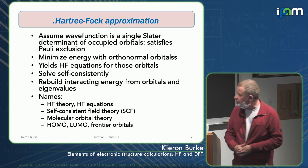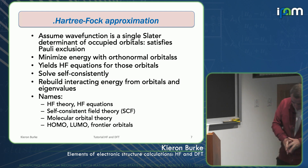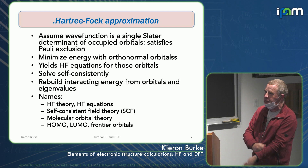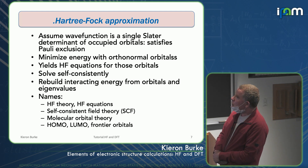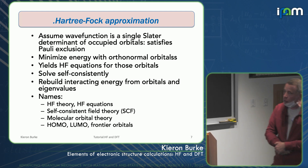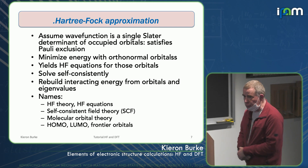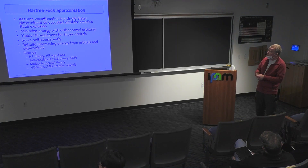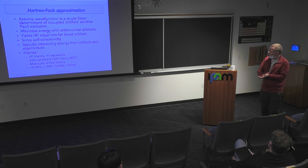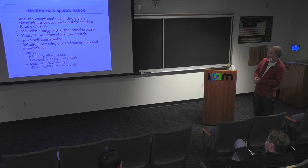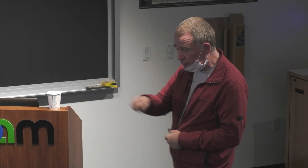The Hartree-Fock approximation is one of the earliest ones — about 1935, I guess, it was first written down. You assume the wave function is a single Slater determinant of occupied orbitals, which means it satisfies Pauli exclusion. You write the wave function as a Slater determinant of orbitals, then minimize the energy requiring the orbitals to be orthonormal. That gives you the self-consistent Hartree-Fock equations. You solve them, going round and round until things stop changing.